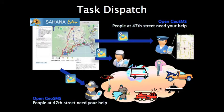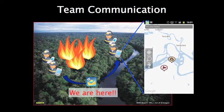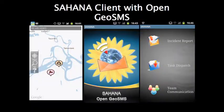For task dispatching, it's easier for the rescue team to go out, receive a request telling them where to go, without carrying a paper note with X and Y coordinates. For team communications, alpha team and beta team can know each other's location just by using OpenGeoSMS. We provide a free small application that collaborates with Shahana, covering all three major features.